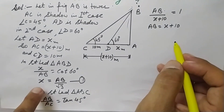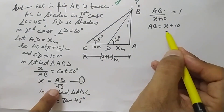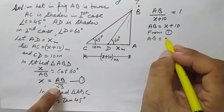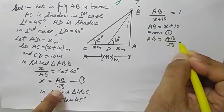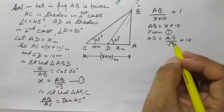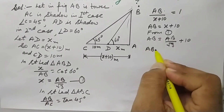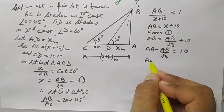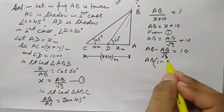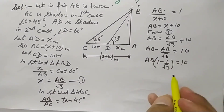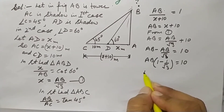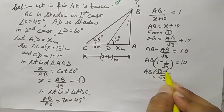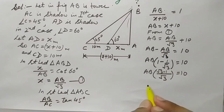From equation 1, X equals AB over root 3. We need to find only AB. Substituting X into AB equals X plus 10: AB equals AB over root 3 plus 10. Bringing AB over root 3 to the left side: AB minus AB over root 3 equals 10. AB is common, so AB times (1 minus 1 over root 3) equals 10. Taking LCM root 3: AB times (root 3 minus 1) over root 3 equals 10.